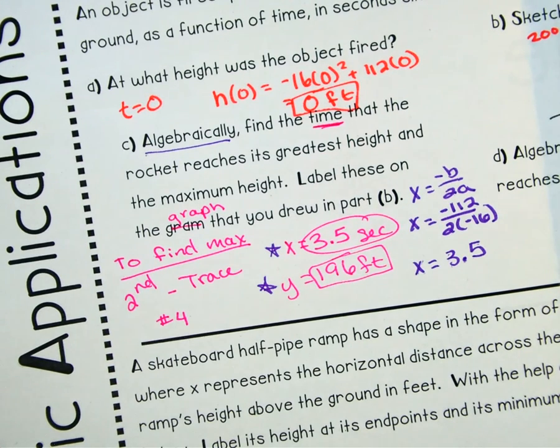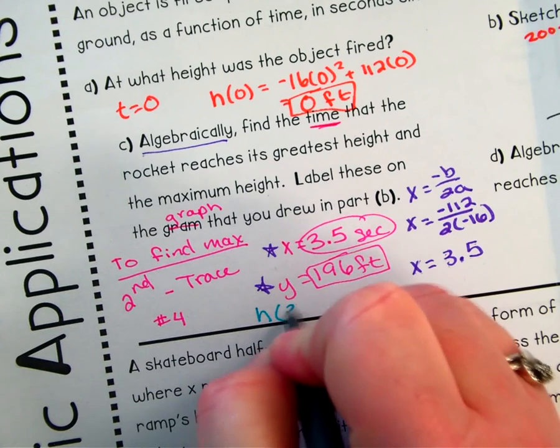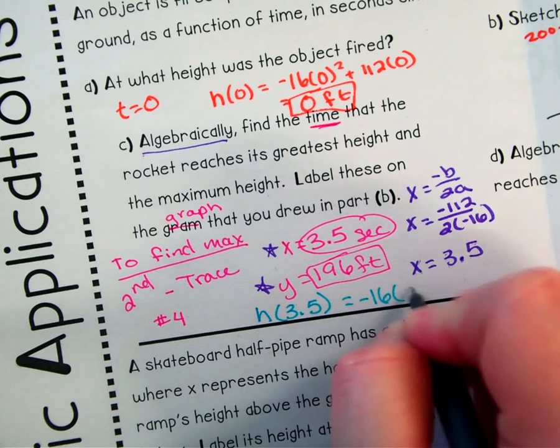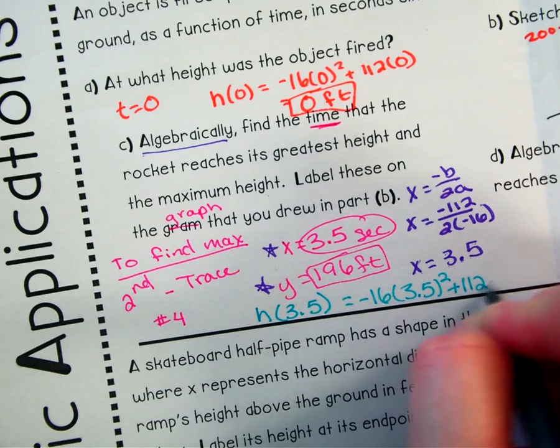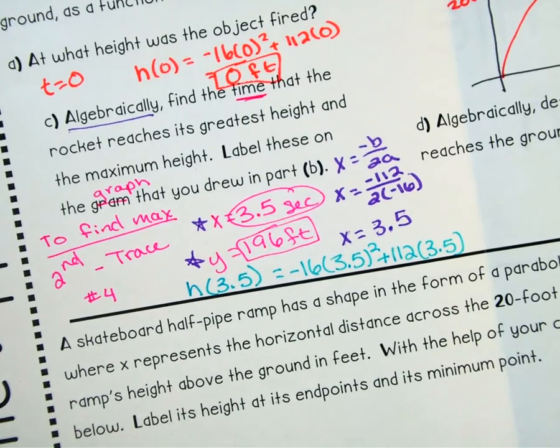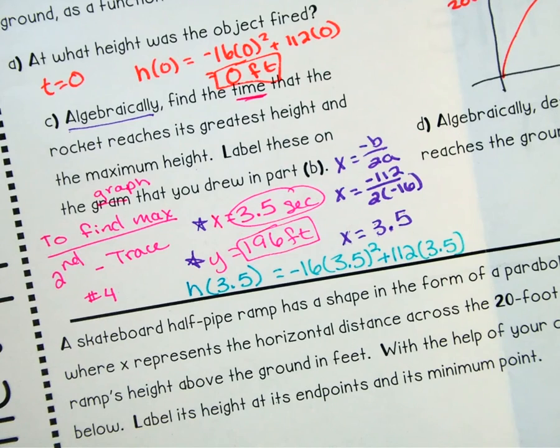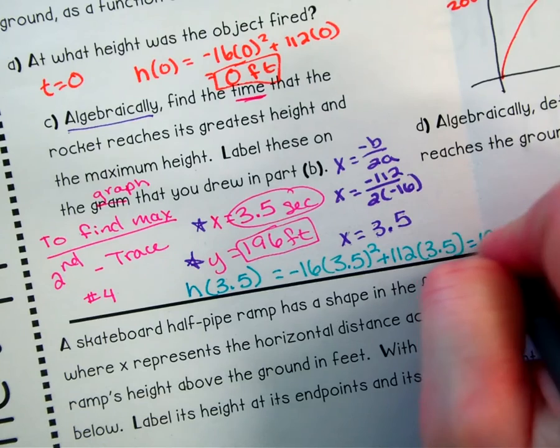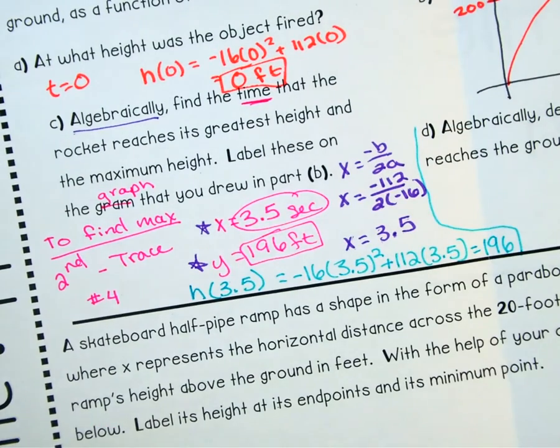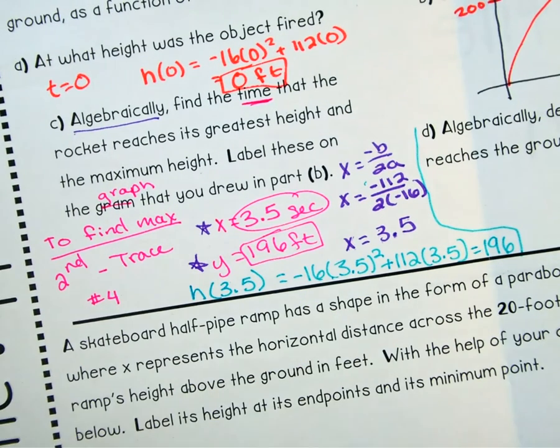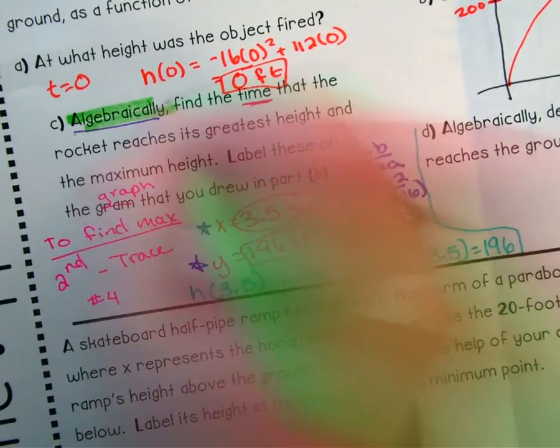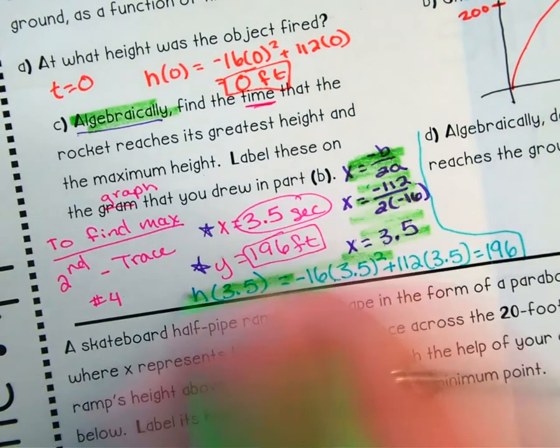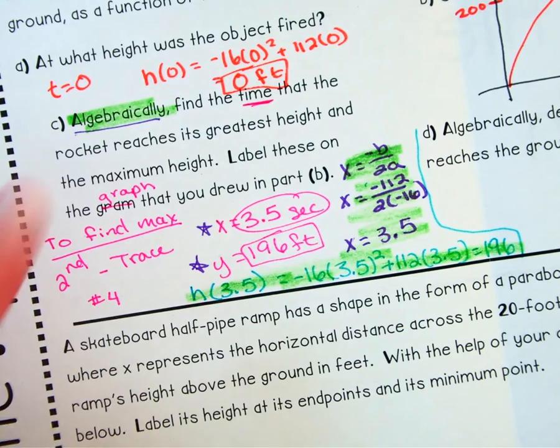So then I'm going to take my 3.5 and I'm going to plug it in for my t. And then I'll type in my calculator, negative 16 times 3.5 squared plus 112 times 3.5 and I get 196. So this is algebraically how we find it, which is what they wanted. Algebraically. That is our algebraically. The other stuff, if it doesn't say that phrase algebraically, you can use that calculator. And I like to show you how to use that calculator to find it, even though the directions did say algebraically, because it's good to always check your work.